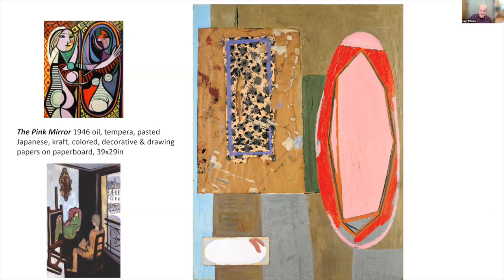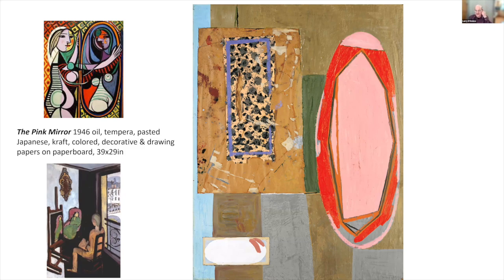The 'Pink Mirror' is another wonderful collage from 1946. It has correlations to Picasso and Matisse, where the mirror is used as a compositional device. The inventive use of materials and the subtle link to Matisse and Picasso's use of the mirror, combined with the play of pattern and geometry, reflects Motherwell's intelligence at work in the picture.